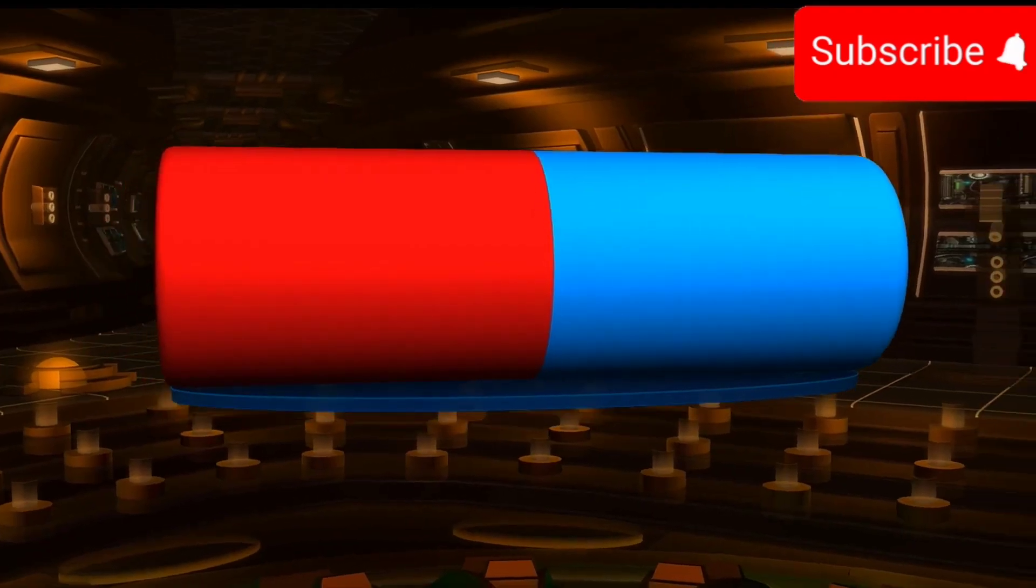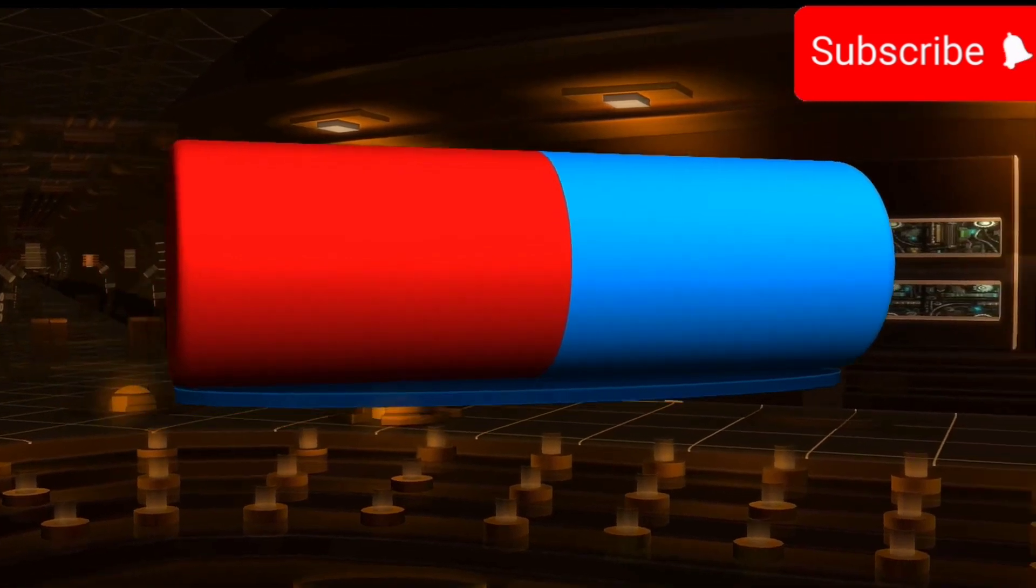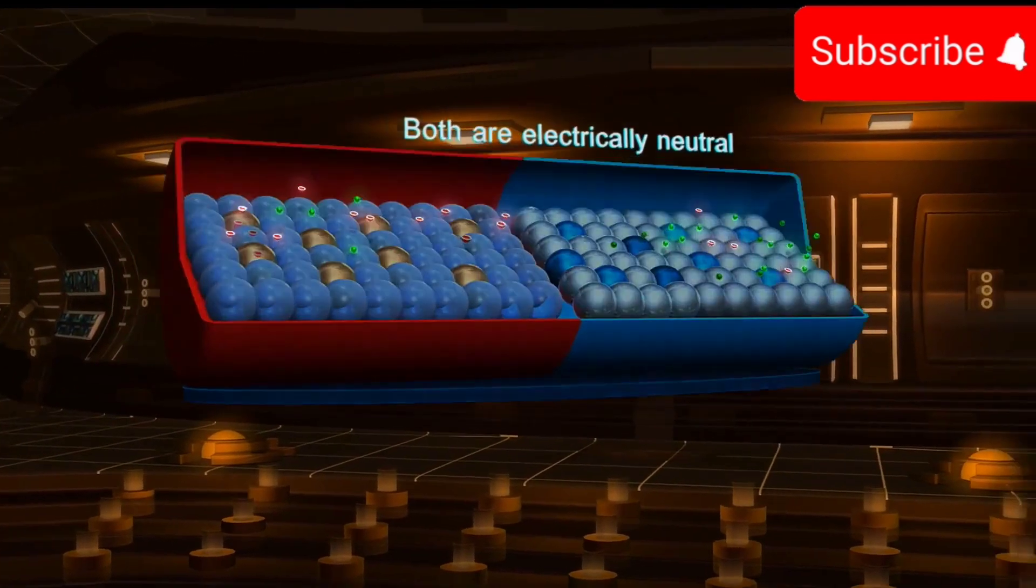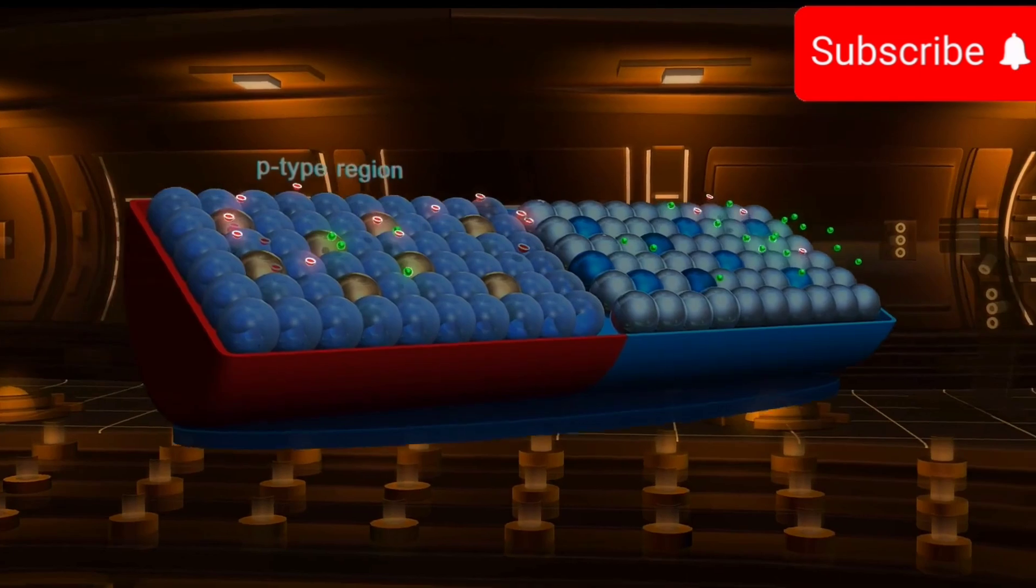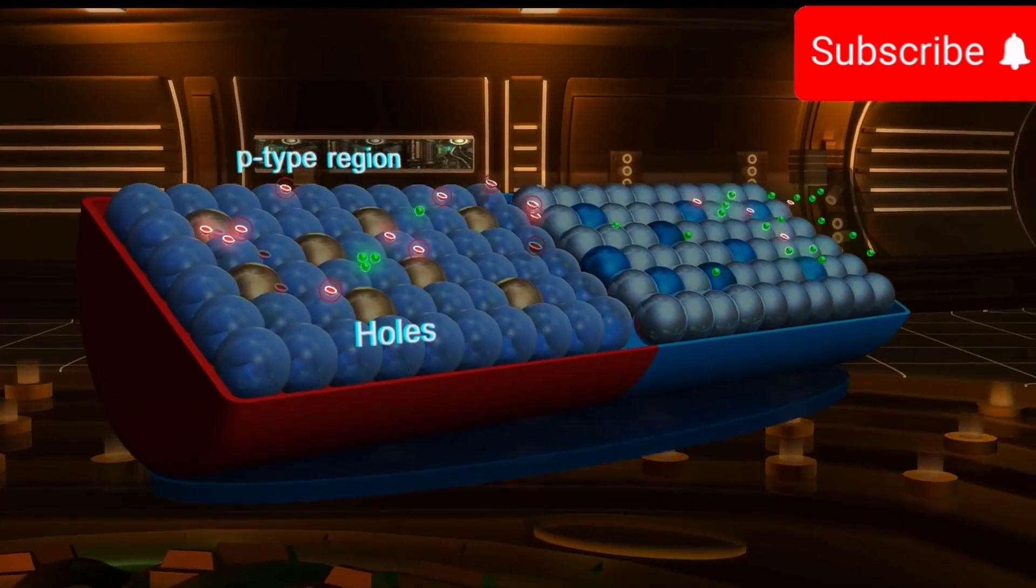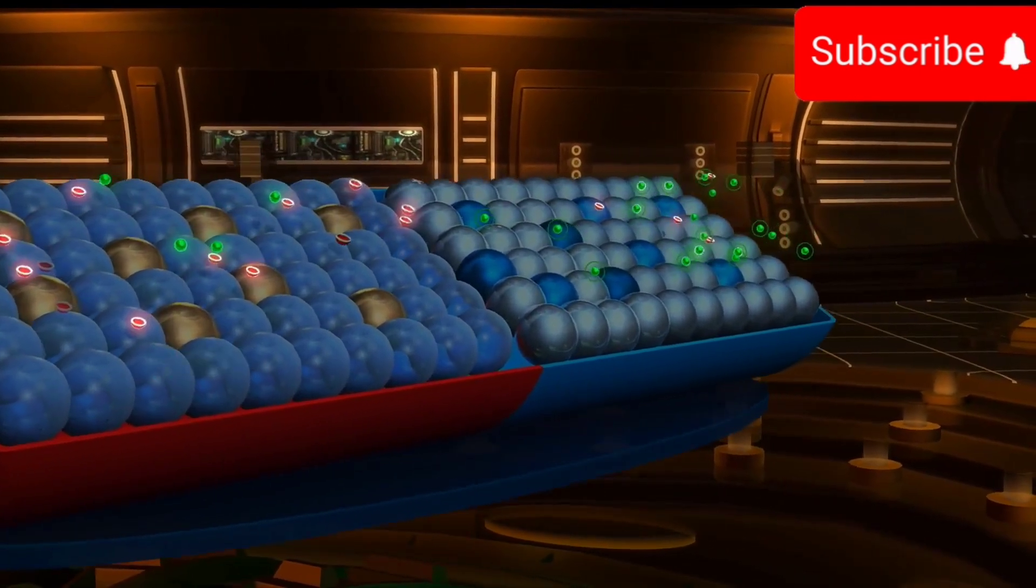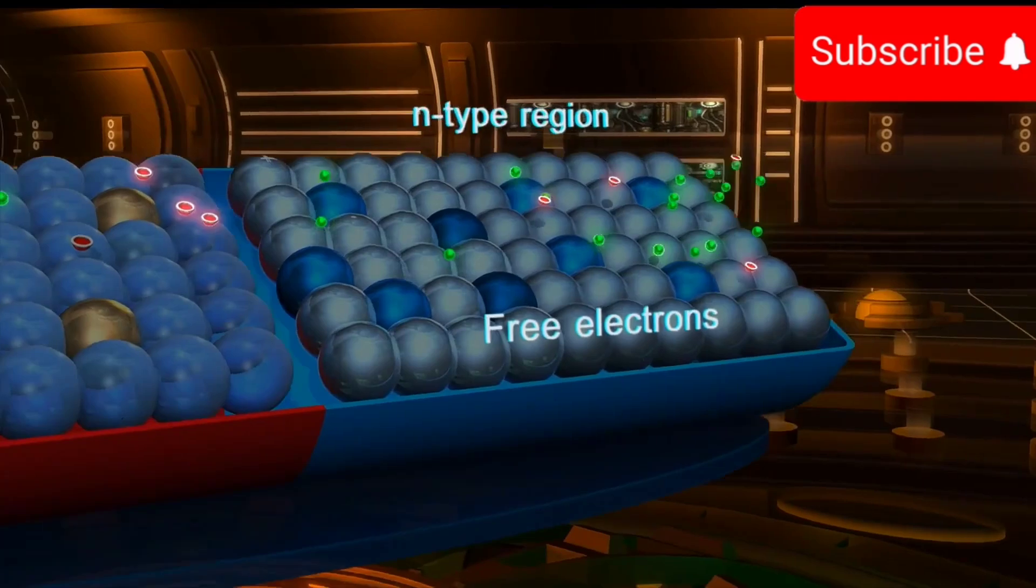As PN junction is just formed, both P and N regions are electrically neutral. The P-type region has holes as majority charge carriers, while the N-type region has electrons as majority charge carriers.